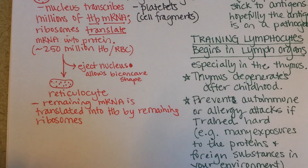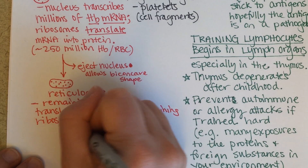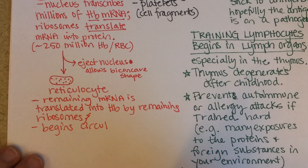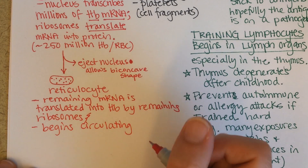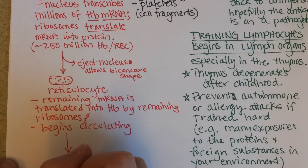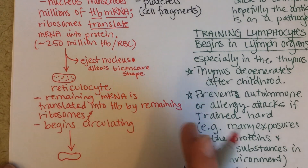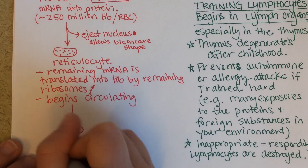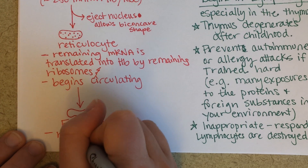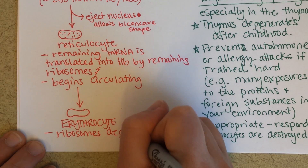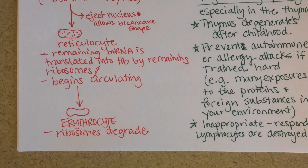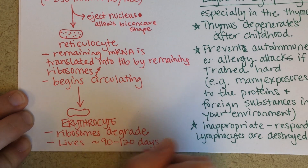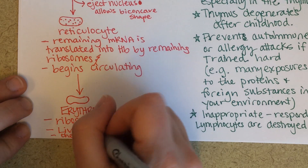The reticulocyte begins circulating. In your blood you have reticulocytes, which are basically immature red blood cells. It takes about two days for the ribosomes to finish being degraded, and now it's called an erythrocyte — you can no longer see those ribosomal dots.